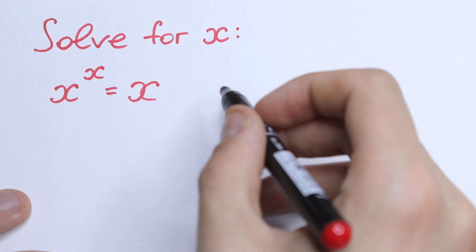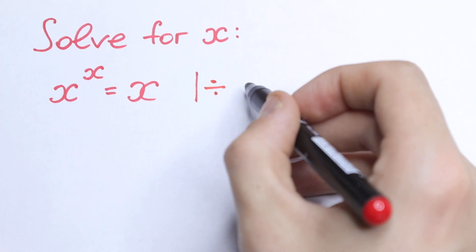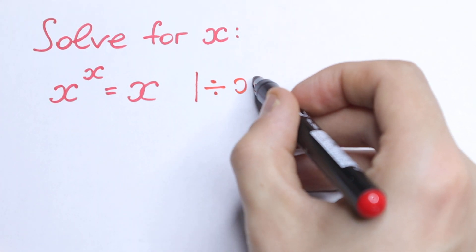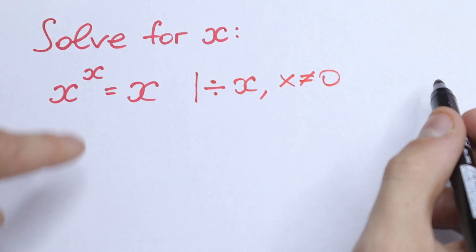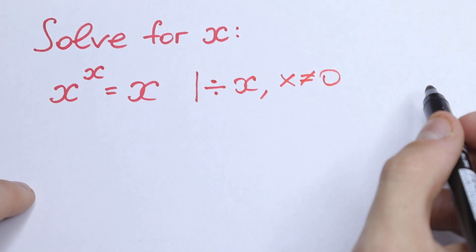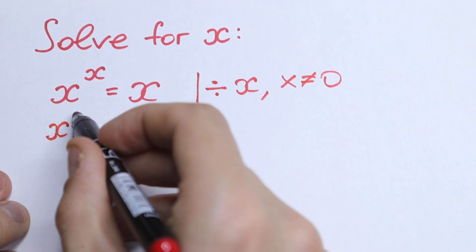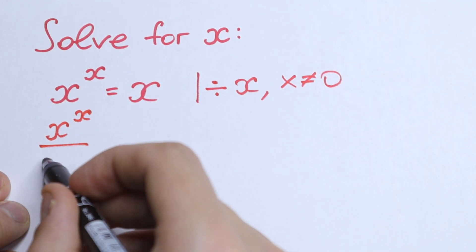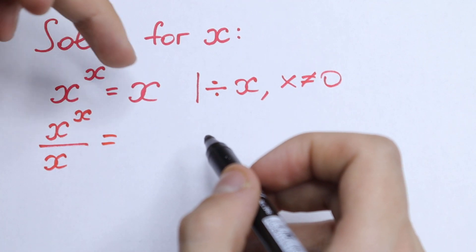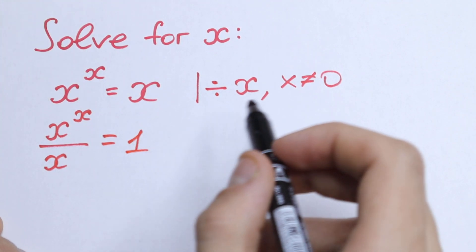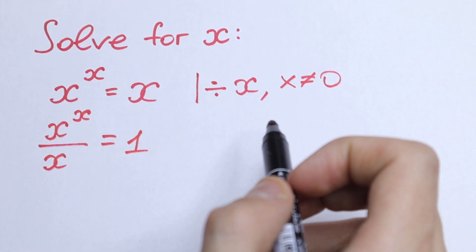Take a look — we can divide both sides by x. Note that x is not equal to zero. So we divide both sides by x: x to the power x over x on the left, and x divided by x on the right, which equals 1.